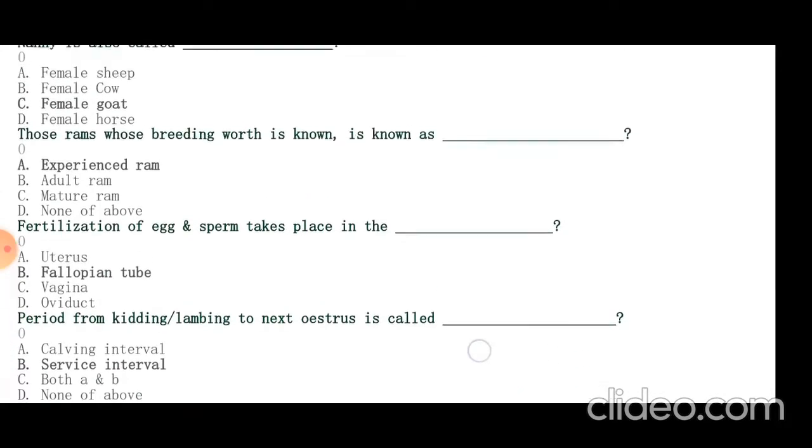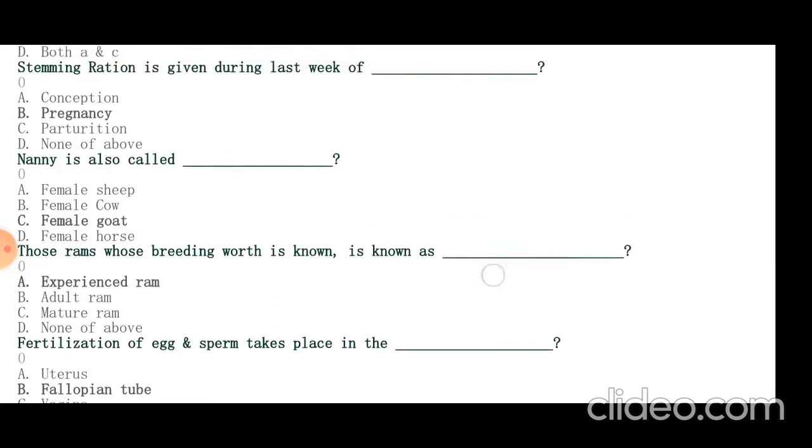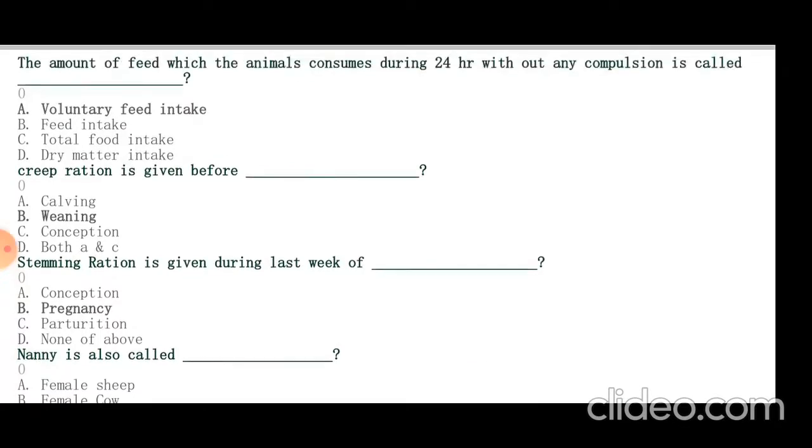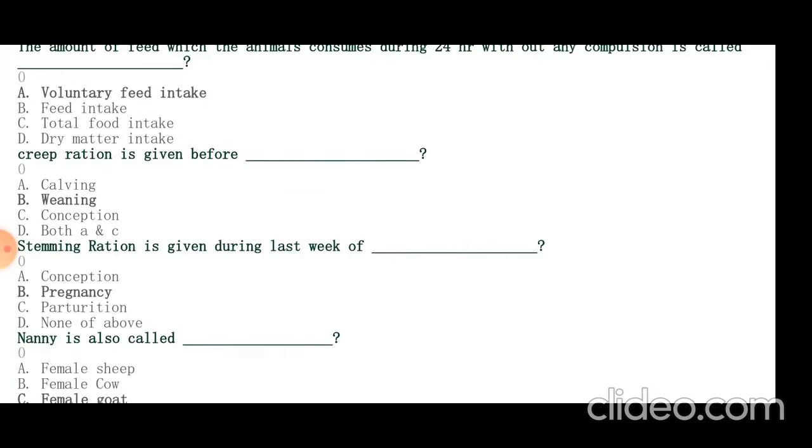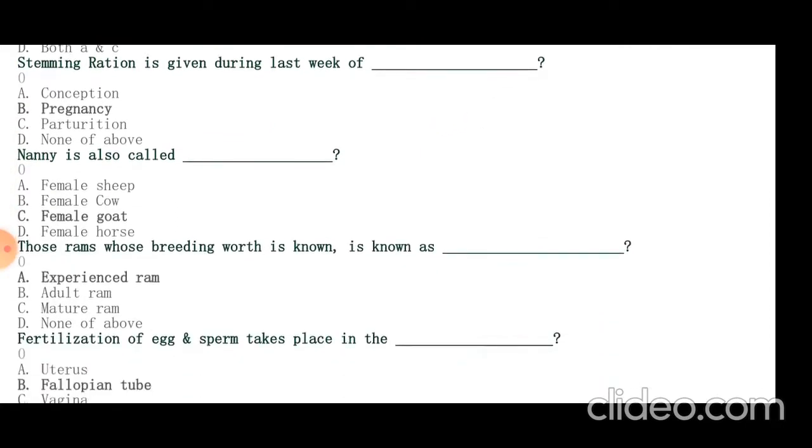Experienced ram is the ram whose breeding worth is known. Nani is also called female goat. Steaming ration is given during last week of pregnancy. Creep ration is given before weaning.